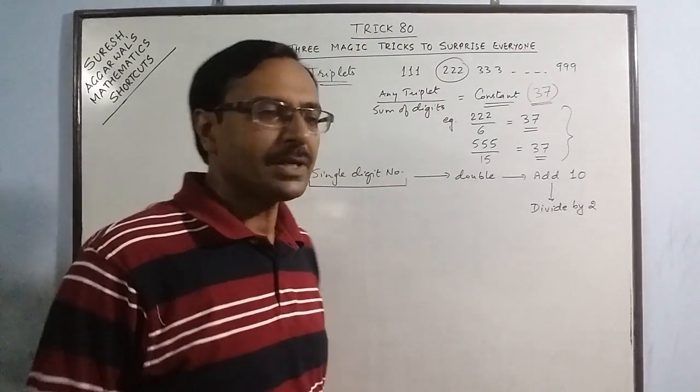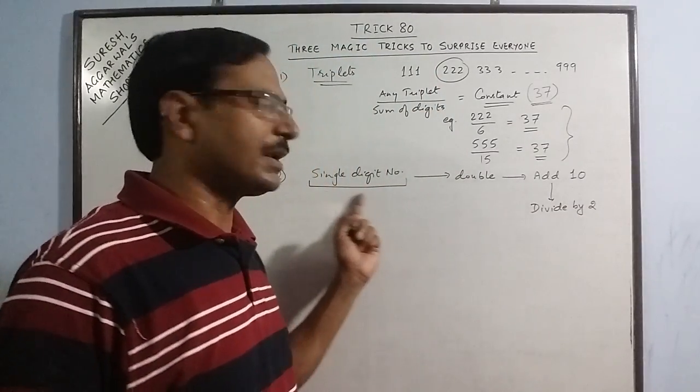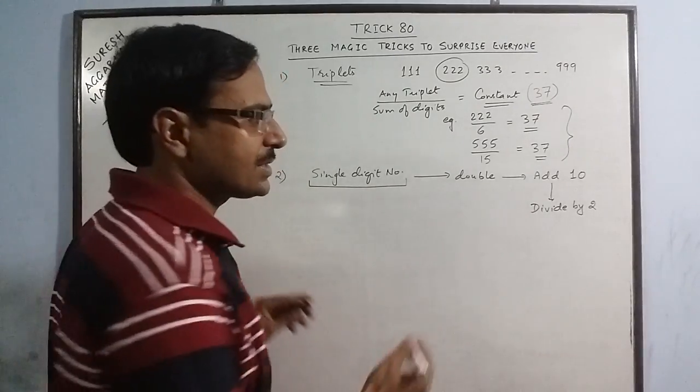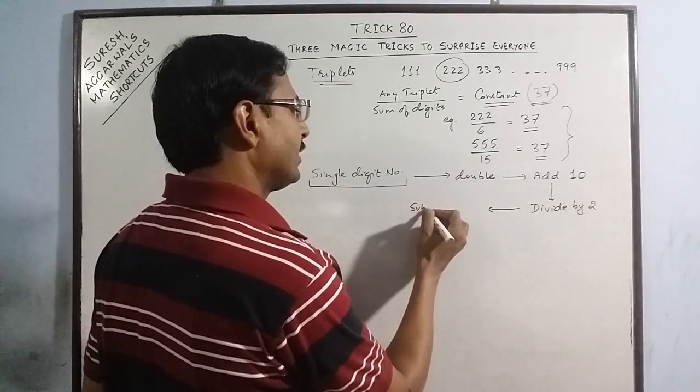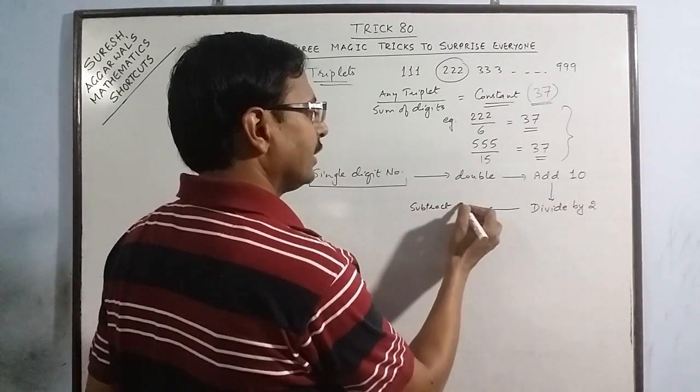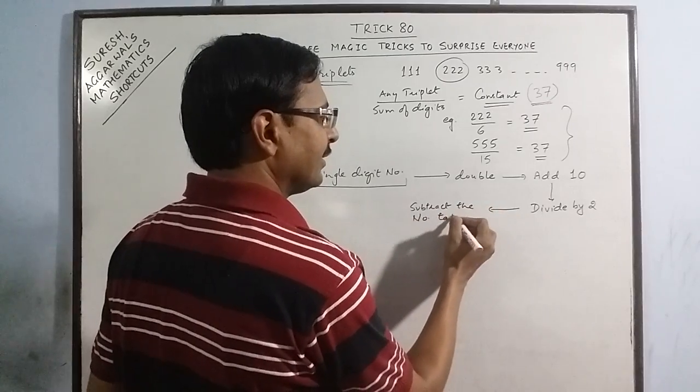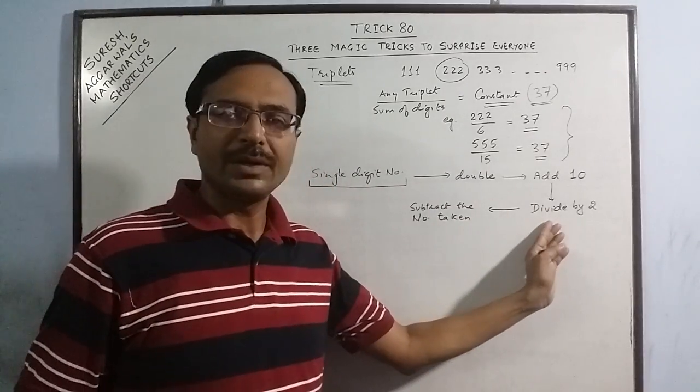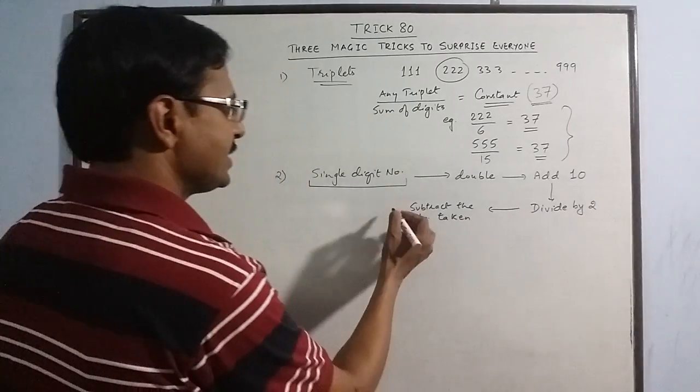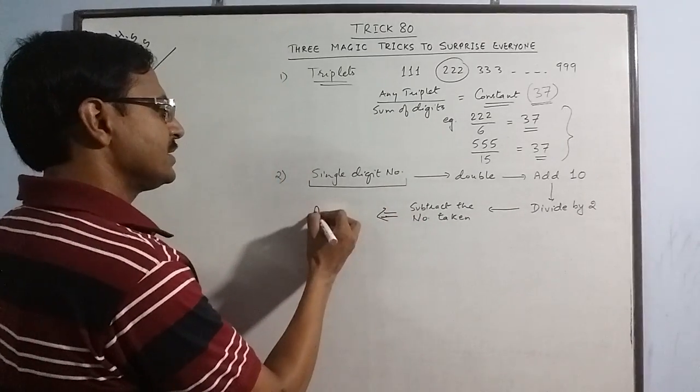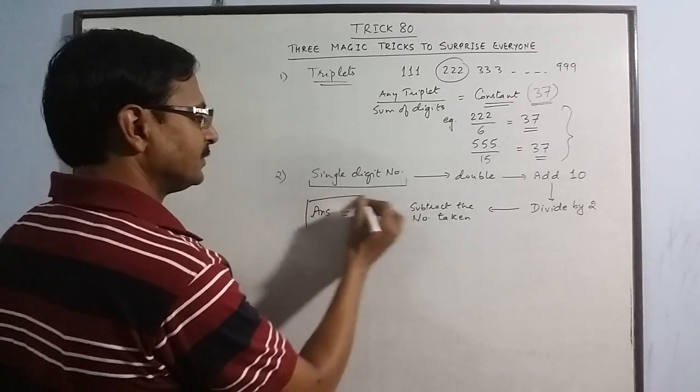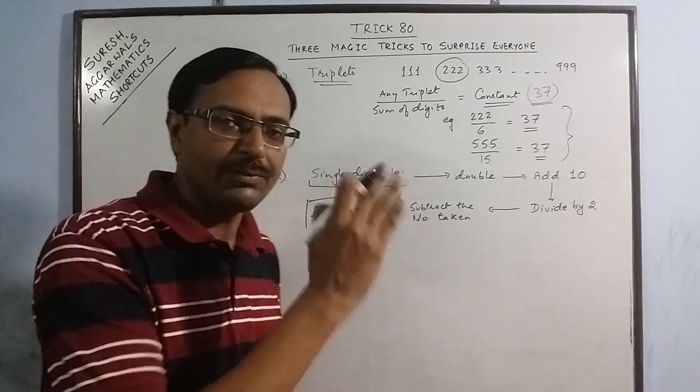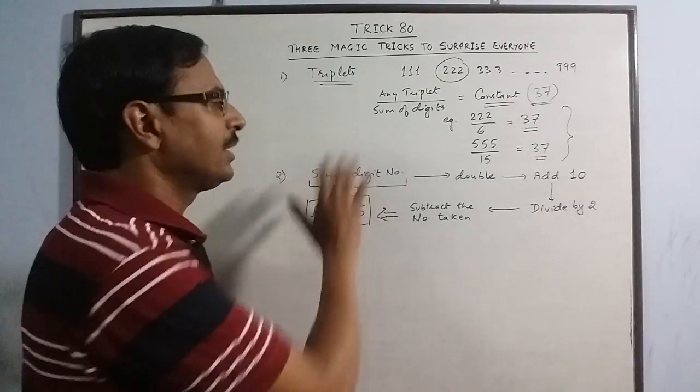All these calculations are very easy, can be done in mind because the number selected is a single digit number. Then after getting the number half, you just ask him to subtract the number taken—that is, the initial number which he has taken—he has to subtract from the result of this step. Now just tell him that his answer is 5.